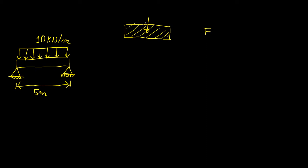When we have a large body, the center of mass is basically a point in space that contains all the mass of the entire body — it's a very similar concept. In the case of a rectangle, the centroid is going to be located halfway through. So if our total length is L, that's going to be L/2 on both sides.